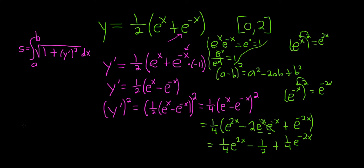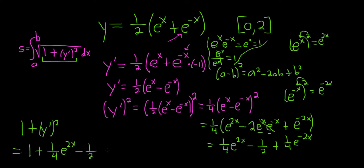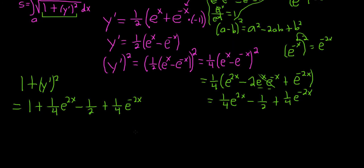Now we need to add 1 to all of this. So 1 plus y-prime squared equals 1 plus 1/4 e^{2x} minus 1/2 plus 1/4 e^{-2x}. Combining the constants, 1 minus 1/2 is positive 1/2. So we have 1/4 e^{2x} plus 1/2 plus 1/4 e^{-2x}.